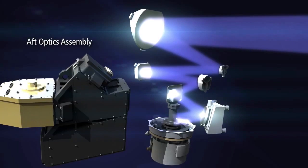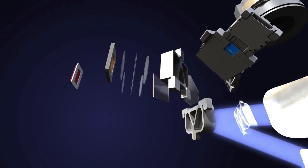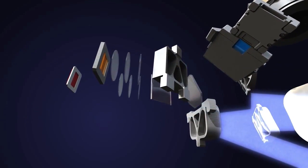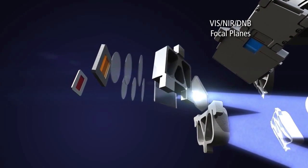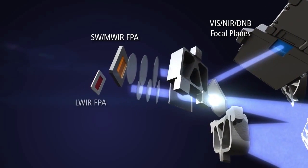From there, light is directed into the aft optics assembly to be split into three focal plane assemblies that operate in the visible, near-infrared and day-night band, as well as in the short, mid, and long-wave infrared wavelengths.